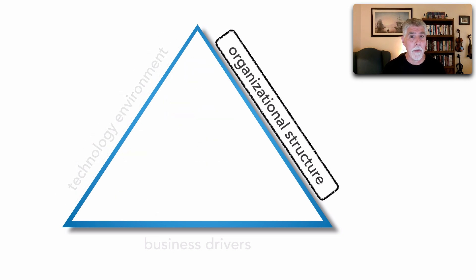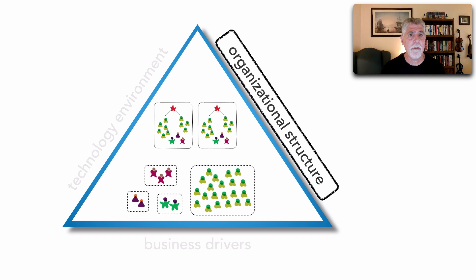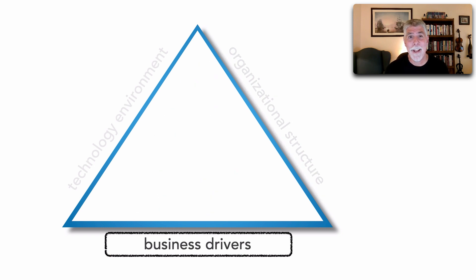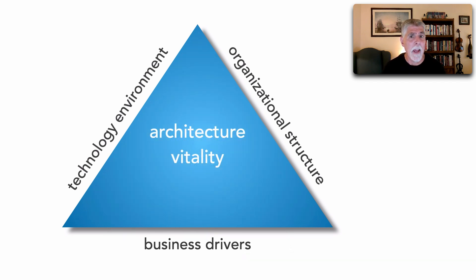When we talk about organizational structure, we're really talking about how teams are organized and the overall communication structure within the organization. Do we have pools of developers, teams of testers, DBAs, and release engineers all in separate silos, or are they formed as cross-functional teams with specialization — even domain-based teams? Are we embracing DevOps? All of these factors can influence whether our architecture is still sound. The third factor is business drivers: things like frequent mergers and acquisitions, competitive advantage, time to market, and user satisfaction.